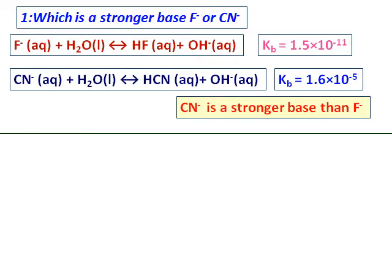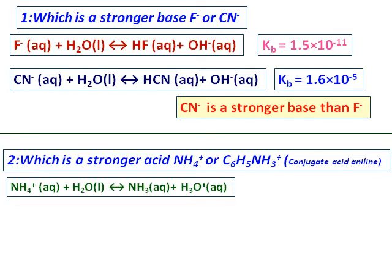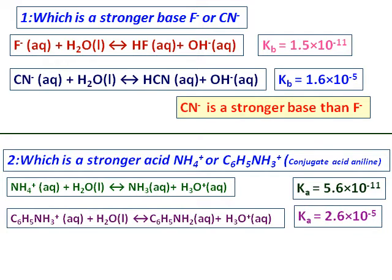The next question is, which is the stronger acid, NH₄⁺ or C₆H₅NH₃⁺? And this is the conjugate acid for aniline. And the acid reactions are given. With water, they form hydronium ion H₃O⁺.